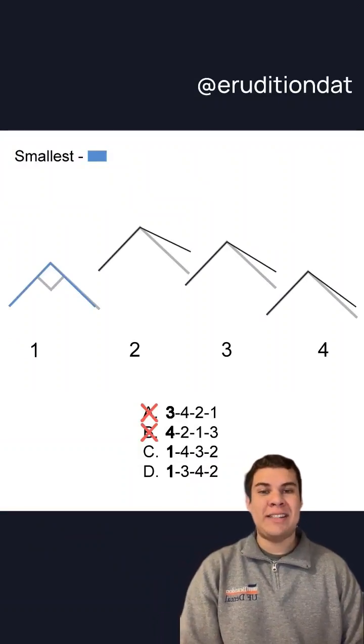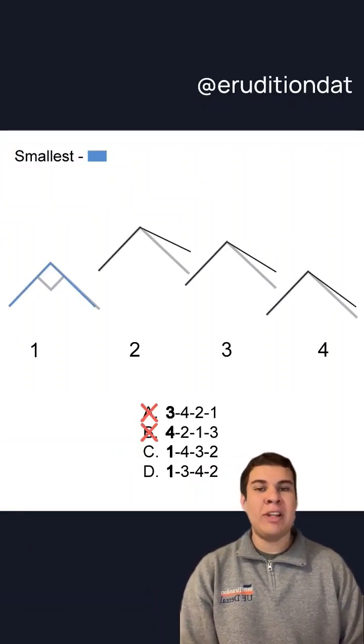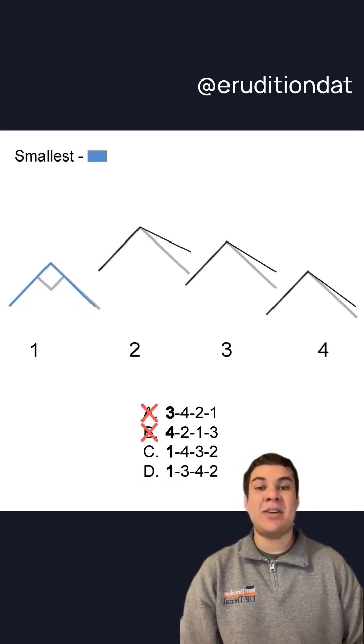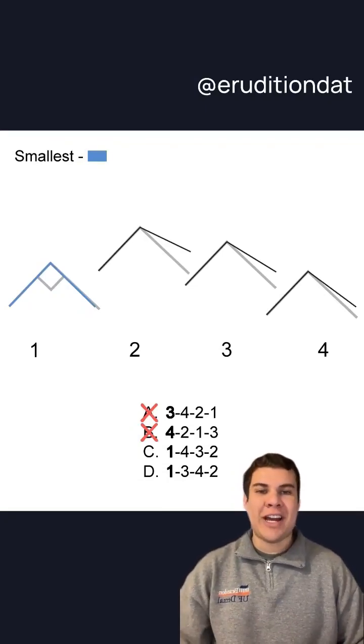After narrowing down your choices to C and D, you're going to notice that really what you're deciding between here is angles three and four. So when using that right angle strategy again,